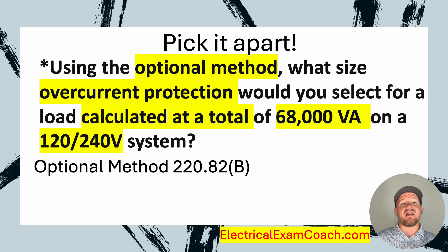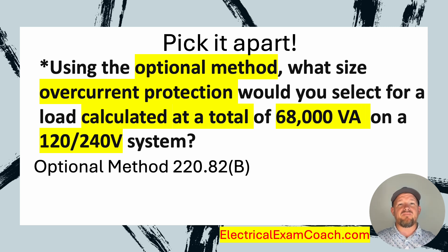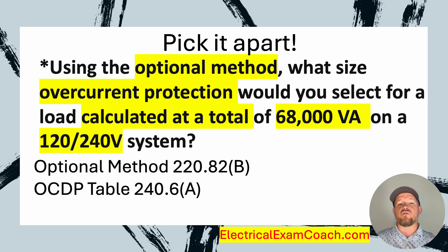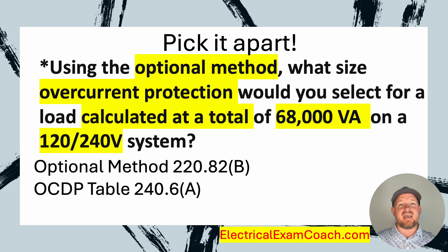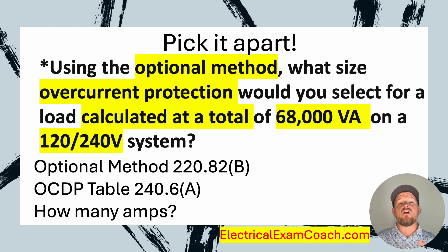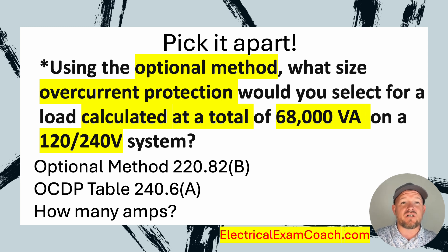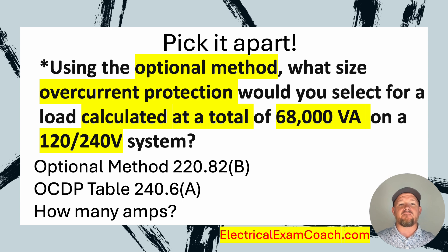The first code I need to go to is 220.82B. That will then lead me to select my overcurrent device at 240.6A. But in order to do that, I have to convert the 68,000 VA over to amps — but I must first apply the optional method demand factors.